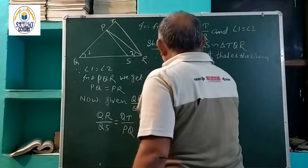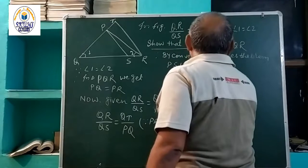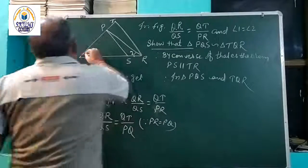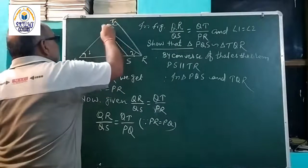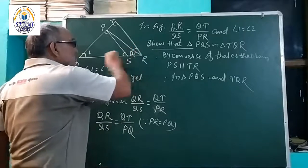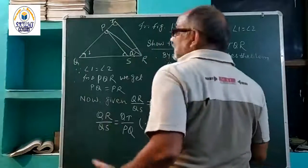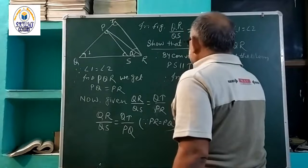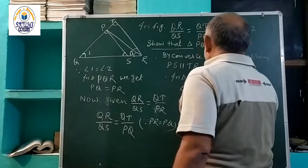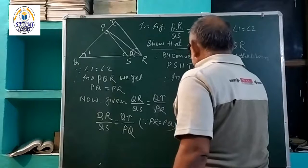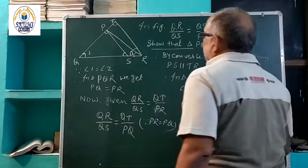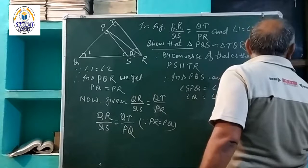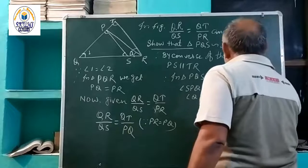Therefore, in triangle PQS and triangle TQR, angle PQS is equal to angle TQR. This is a corresponding angle. Angle Q is common.